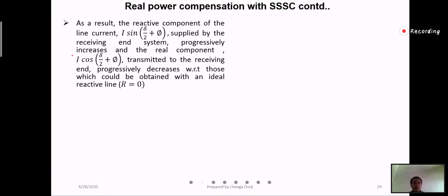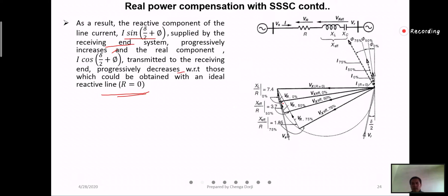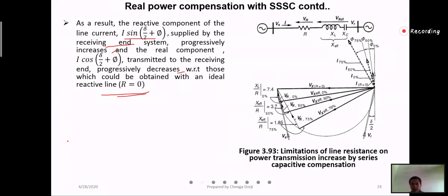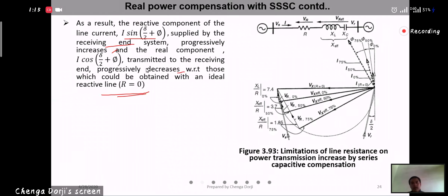As a result of increasing series compensation, the reactive component of the line current I·sin(δ/2) supplied by the receiving end system progressively increases, and the real component transmitted to the receiving end decreases. So reactive component will increase and active component will decrease. Therefore, the limitation of line resistance on power transmission increases with increasing series capacitive compensation, and the power handling capability decreases with increasing degree of series compensation.